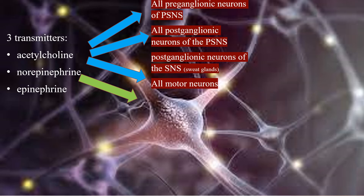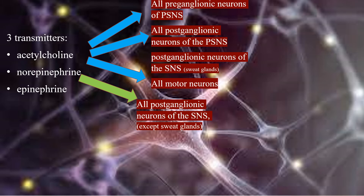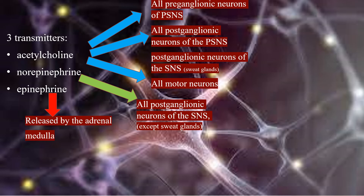Norepinephrine is the transmitter released by all postganglionic neurons of the sympathetic nervous system except those that go to the sweat glands. Epinephrine is the major transmitter released by the adrenal medulla.